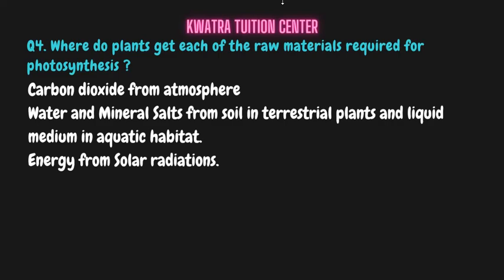Question number four: where do plants get each of the raw materials required for photosynthesis? First, carbon dioxide — they get it from the atmosphere. Second, water and mineral salts — terrestrial plants get them from soil, and aquatic plants get them from the liquid medium. Third, energy — they get it from solar radiation. It is important to write what they get and where they get it from.